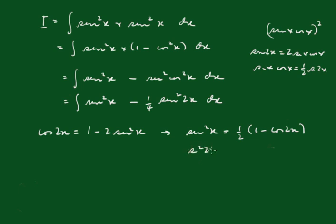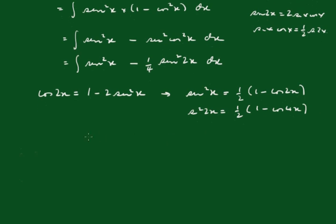Sine squared 2x will be a half of 1 minus cos 4x. So replacing those, we get the integral is equal to...